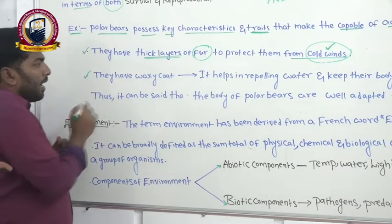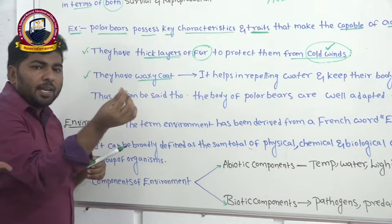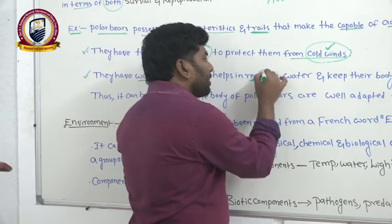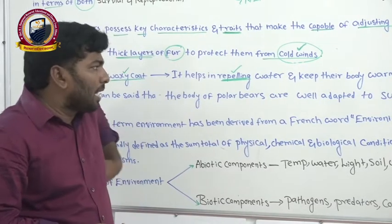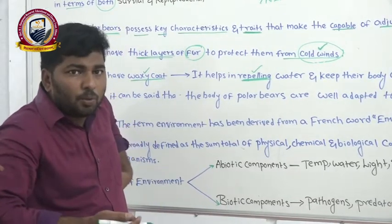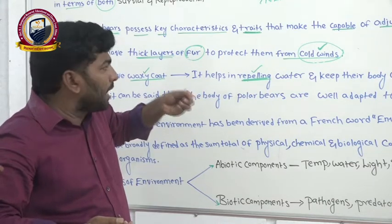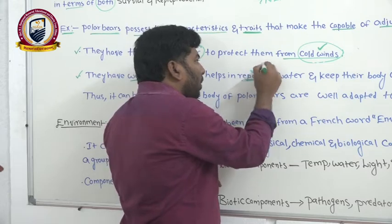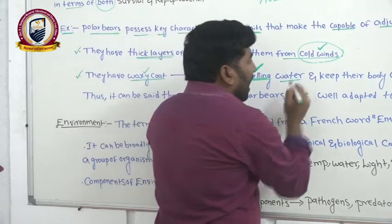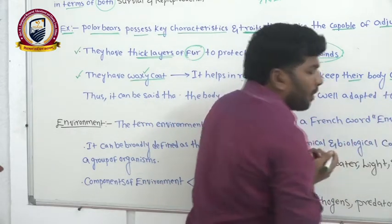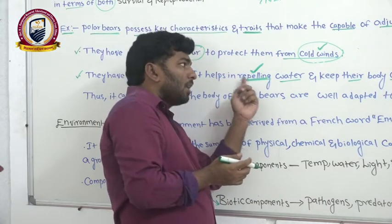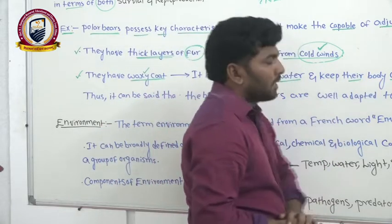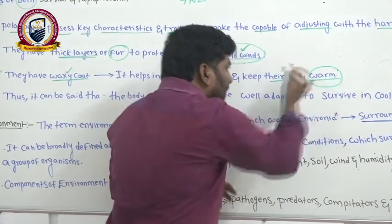The next character: polar bears have a waxy coat — a slippery nature-containing coat. This waxy coat helps in repelling water, just like a rain jacket that has a slippery nature and does not absorb water droplets. It repels the water and keeps their body warm. The water does not enter the body of the organism, and they get protection from the coldness, maintaining warmth in the body.